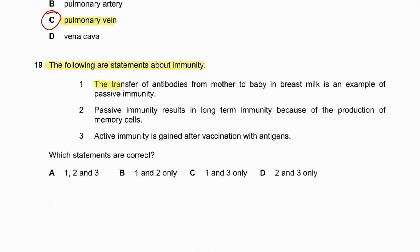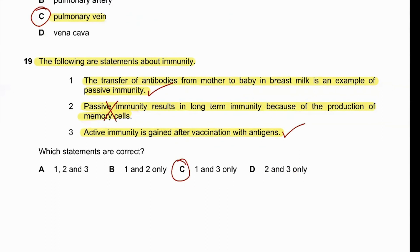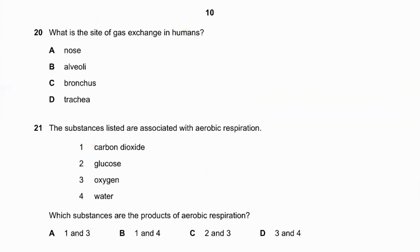Question number nineteen: statements about immunity. The transfer of antibodies from mother to baby in breast milk is an example of passive immunity — correct. Passive immunity does not result in long-term immunity through memory cells — that statement is false, as passive immunity never produces memory cells. Active immunity is gained after vaccination with antigens — correct. Statements one and three are correct, so answer C is correct.